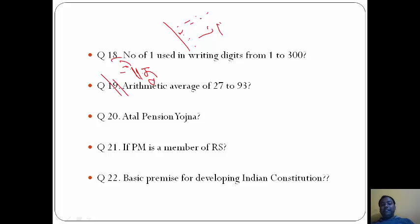For calculating arithmetic average of 27 to 93, it is simple. First we calculate 1 to 93 using the formula n times (n plus 1) upon 2. Then we calculate 1 to 26. Then we find sum of 1 to 93 minus sum of 1 to 26. We get a certain digit and when we divide by the total number of digits from 27 to 93, that is 67, we get the answer as D, 60.